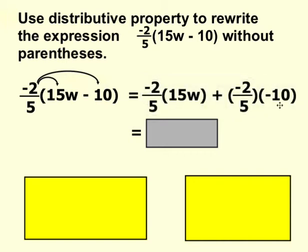So your work will look like this. Next, negative 2 fifths times 15w is negative 6w and negative 2 fifths times negative 10 gets you positive 4.